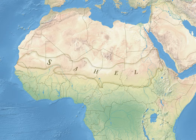Traditionally, most of the people in the Sahel have been semi-nomads, farming and raising livestock in a system of transhumance, which is probably the most sustainable way of utilizing the Sahel. The difference between the dry north with higher levels of soil nutrients and the wetter south with more vegetation is utilized by having herds graze on high-quality feed in the north during the wet season, and trek several hundred kilometres to the south during the dry period. In western Sahel, polygamy and child marriage are common, and female genital mutilation is also practiced across the Sahel.